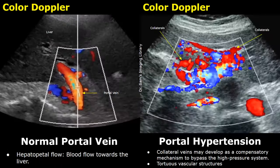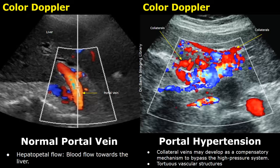In chronic cases of portal hypertension, collateral vessels may form around the main portal vein, and these collaterals can be seen with color Doppler. They will appear as tortuous vascular structures around the portal vein. The collateral veins may develop as a compensatory mechanism to bypass the high pressure system.